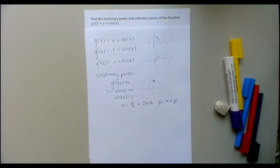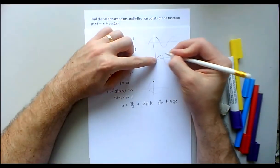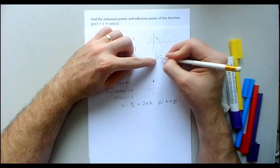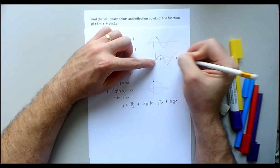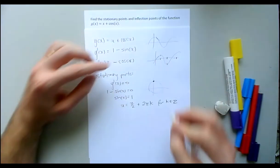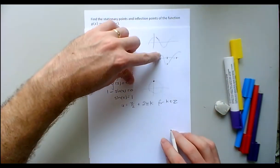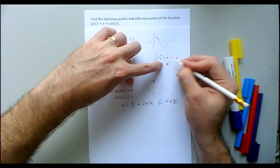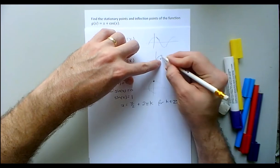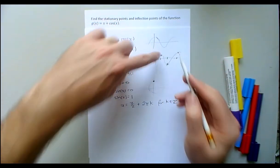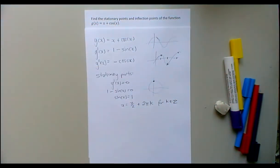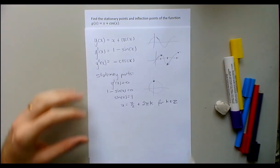So sin(x) = 1 at these positions on the sine graph — that's every peak of the sine graph. The function g has its stationary points at the same places where sine equals 1. That's every second stationary point of sine — pretty cool.